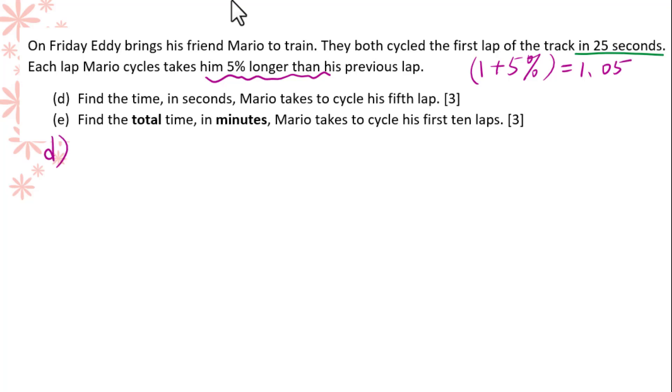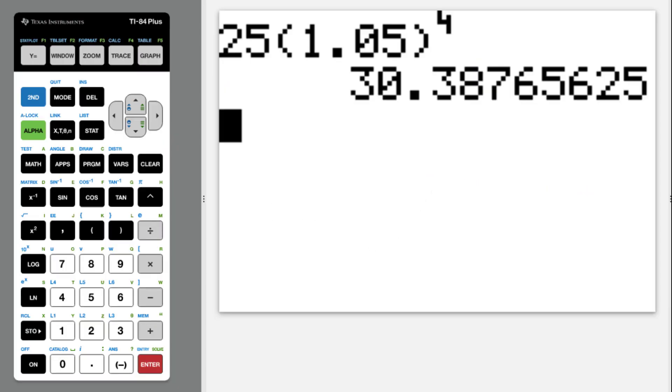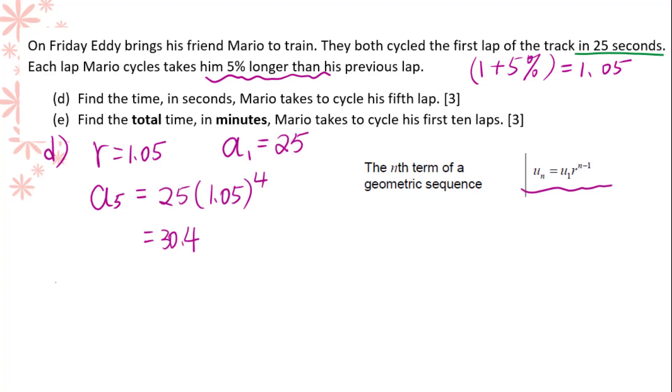So we know this is a geometric sequence. R equals 1.05, A sub 1 equals 25. We are looking for A sub 5. We will use this formula, 25 times 1.05 to the fourth power equals 30.4 seconds.